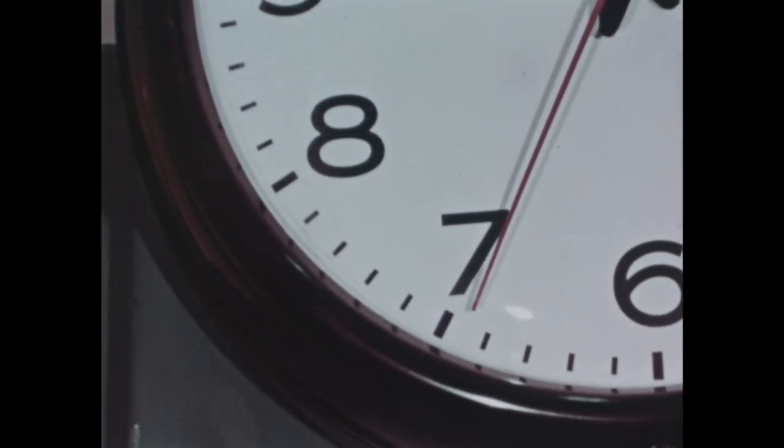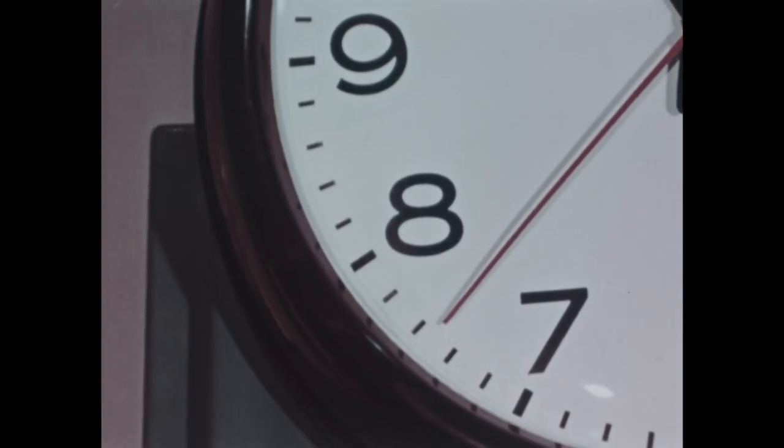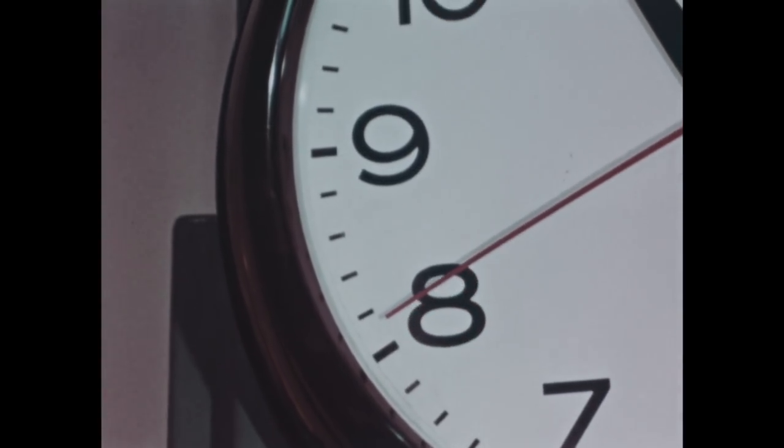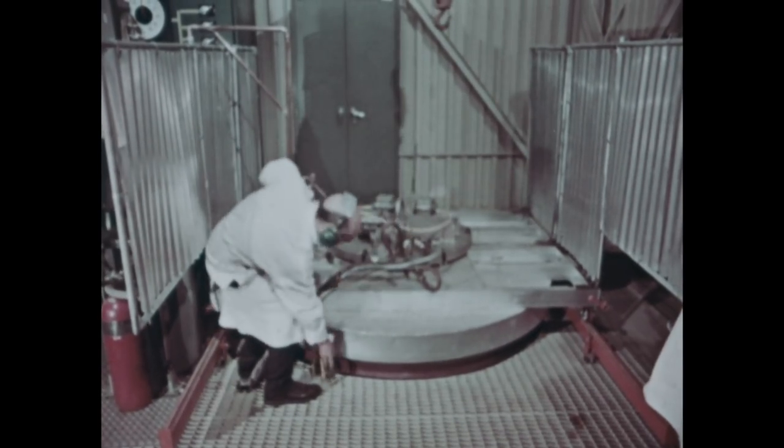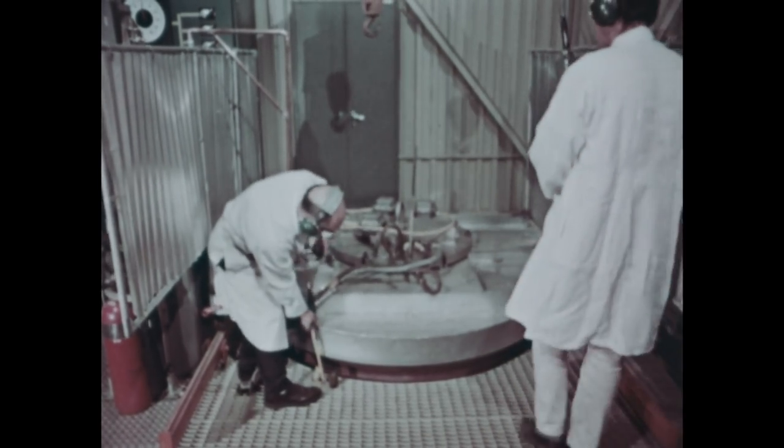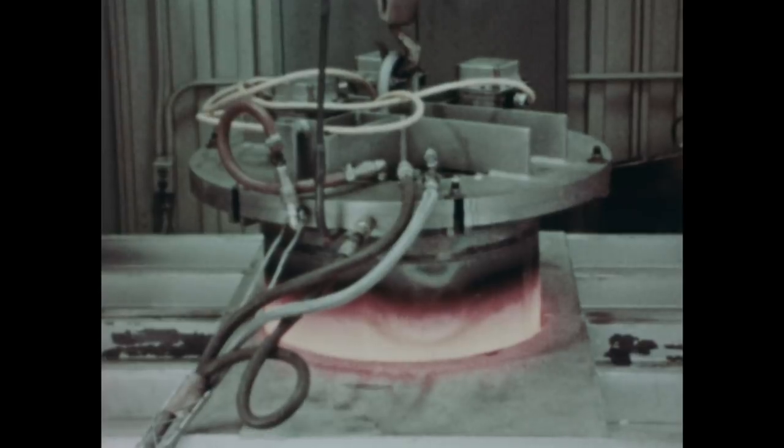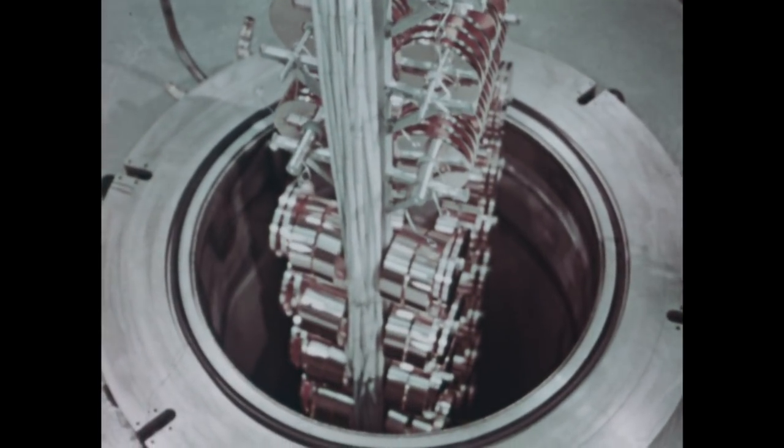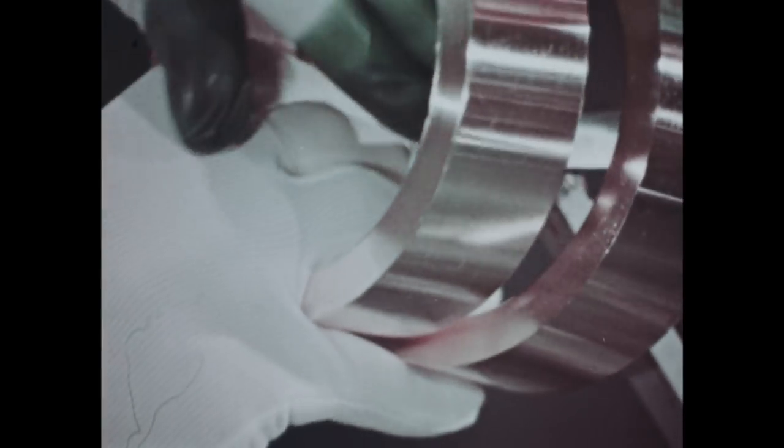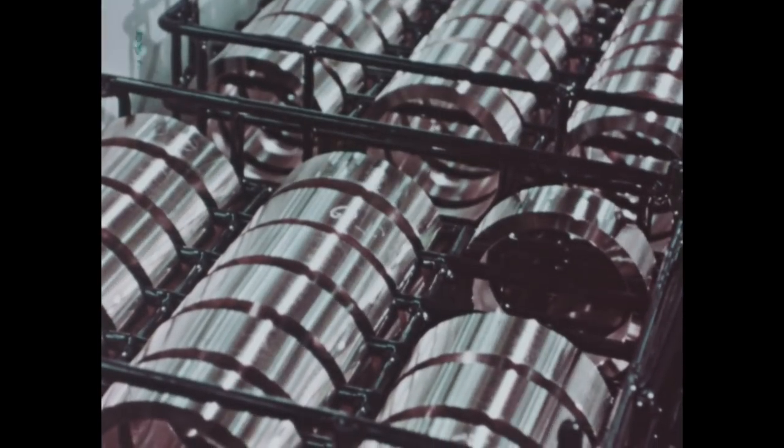40 minutes at 1,030 degrees centigrade in a hydrogen atmosphere. The process is now complete. Protective headgear is worn to prevent ear damage in case the hot retort should explode during removal from the furnace. After annealing, the parts are removed from the retort and placed in baskets. They are now ready for finish machining.